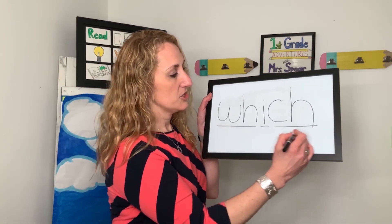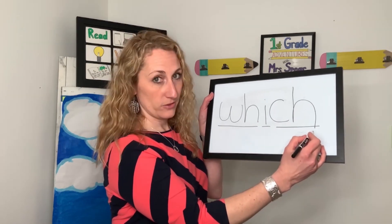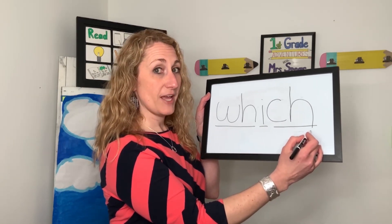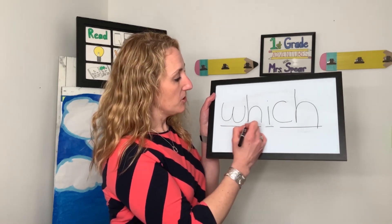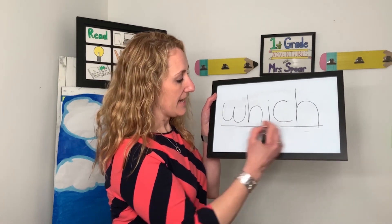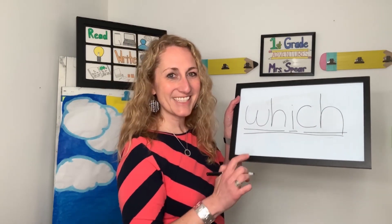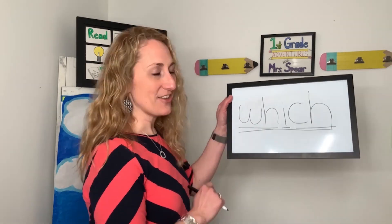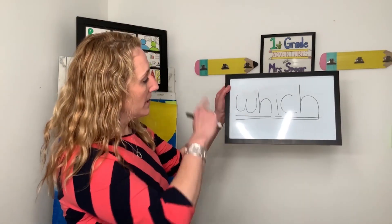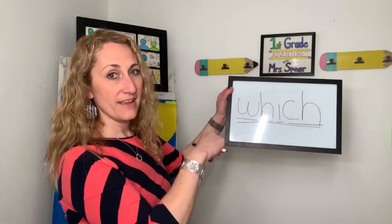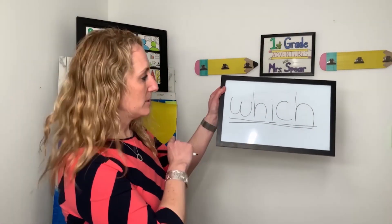W-i-ch — those are the three sounds. The letters we need to spell which are w-h-i-c-h. Which. Let's sky write that together. W-h-i-c-h spells which. The word which.